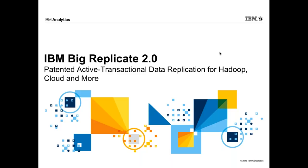Thank you everyone for joining. We are going to talk about BigReplicate today — basically a patented active-active transactional data replication scheme. Years of work has been put towards this data replication algorithm and technology to be live for Hadoop. It enables everybody to have read and write capabilities almost in sync all over their data centers.